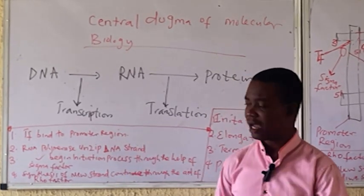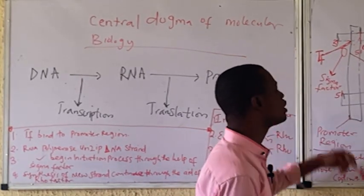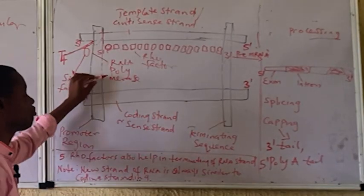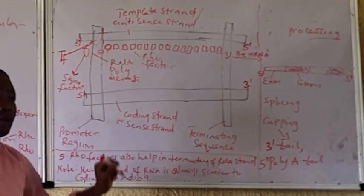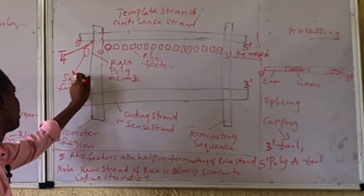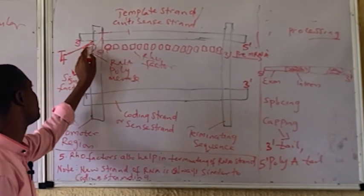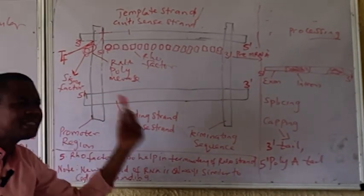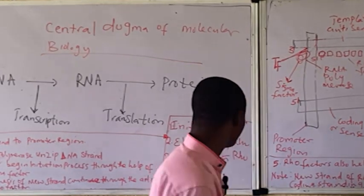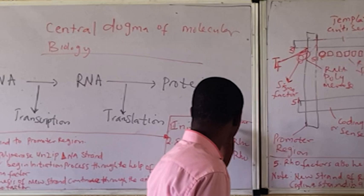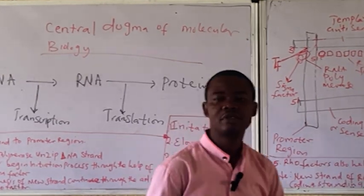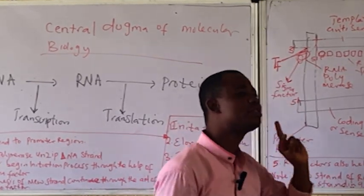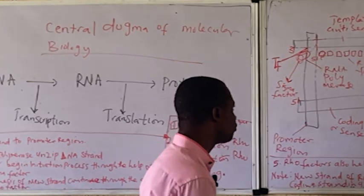After the RNA polymerase unwinds the DNA strands, it begins the synthesis of a new RNA strand. But it needs the help of another factor known as the sigma factor. The sigma factor helps the RNA polymerase to start the synthesis of the RNA strand. That is the process of initiation — the sigma factor plus RNA polymerase together start the process.